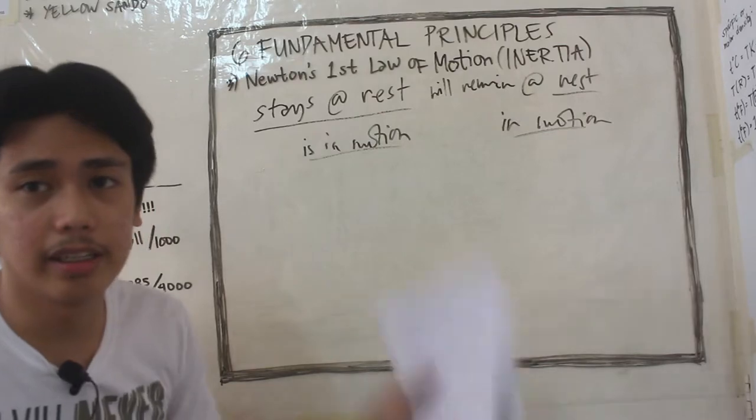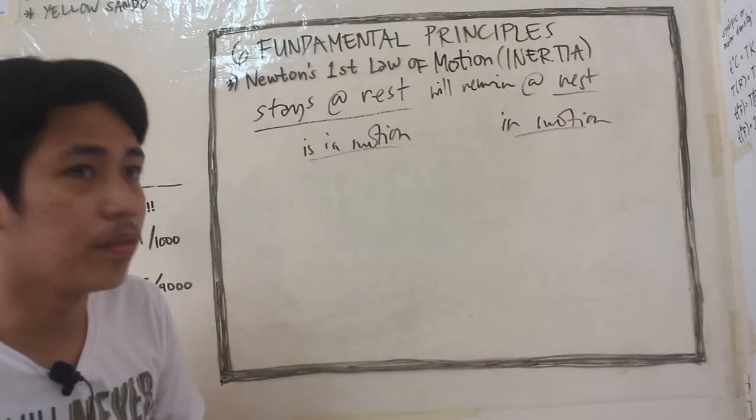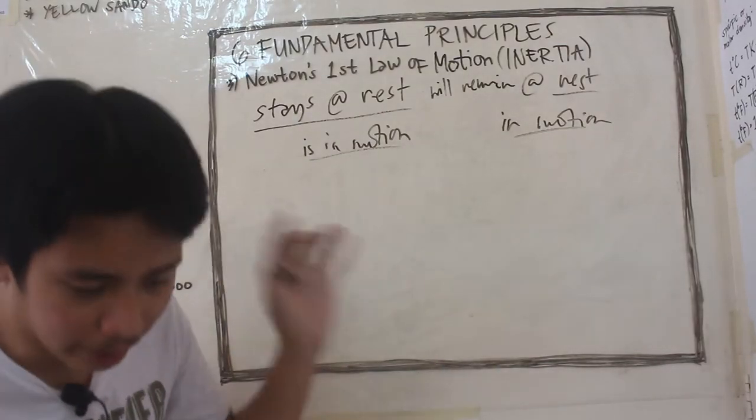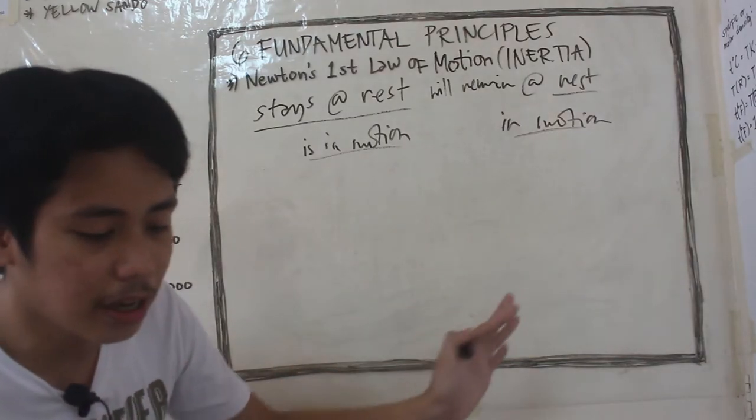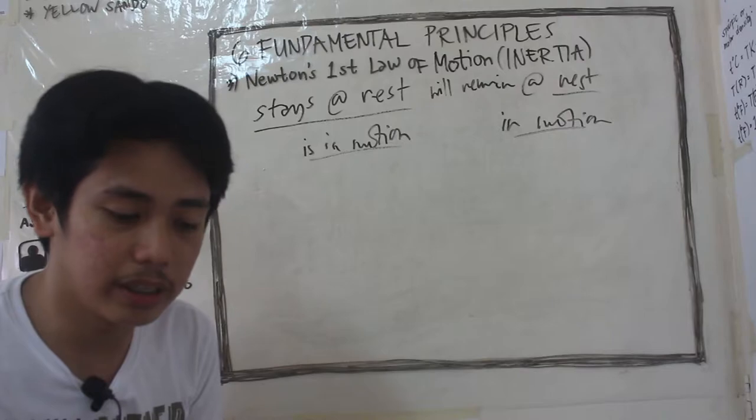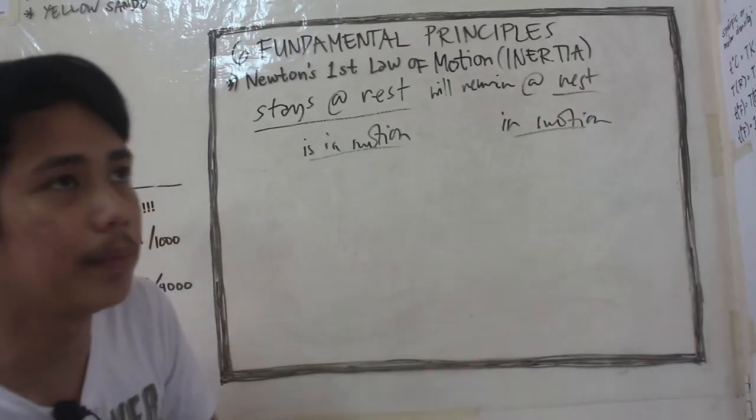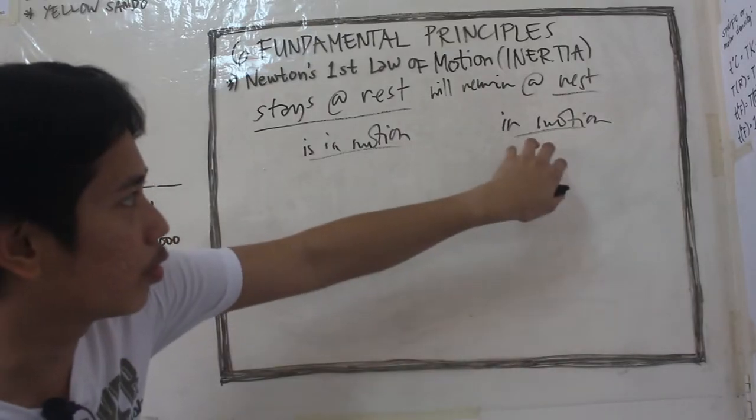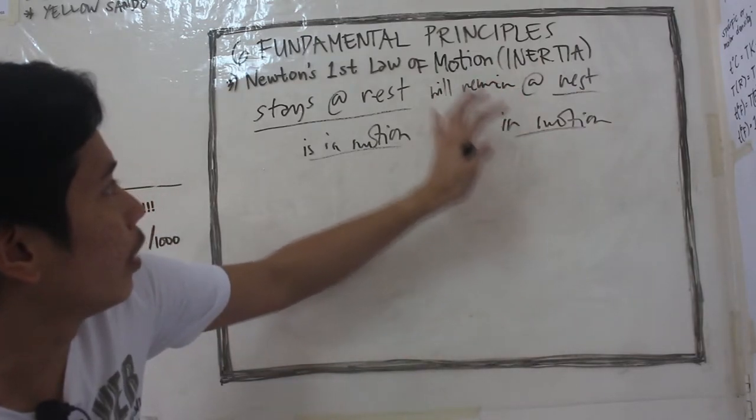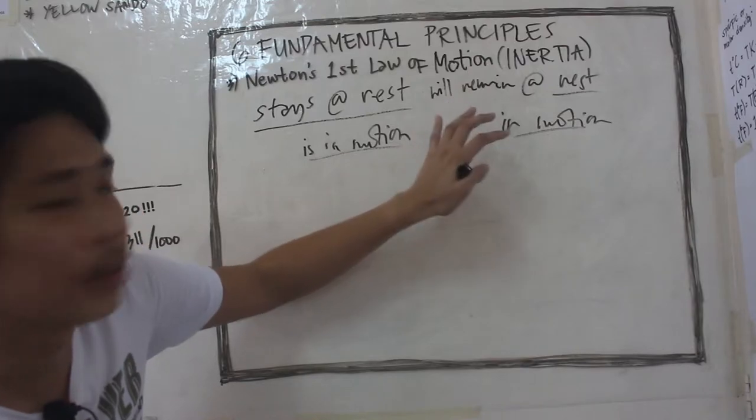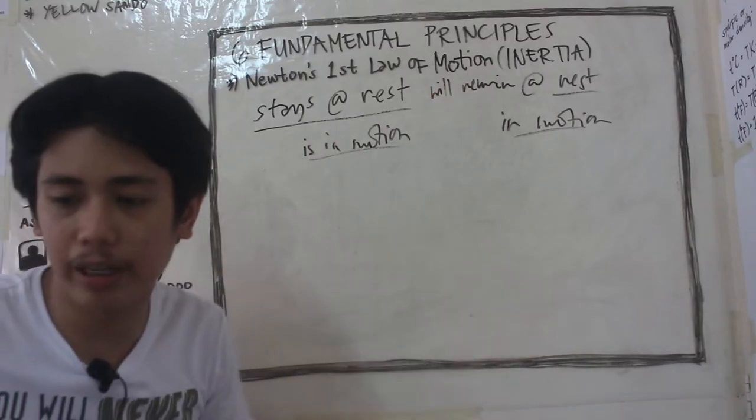So, ano nga ba yung mga external force na yun? Let's say, for instance, friction, wind resistance, yan niya, parang ganun. So, yan yung mga external forces that could oppose the motion of the object if the object is moving or that could make the object from rest para gumalaw siya.